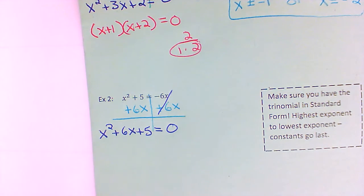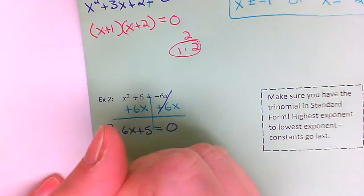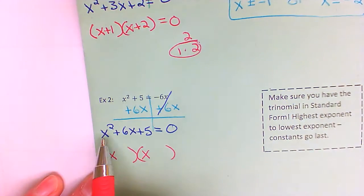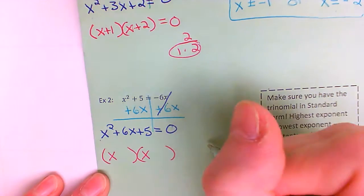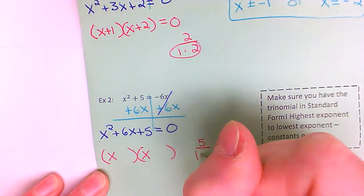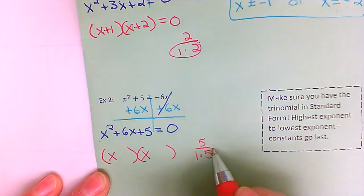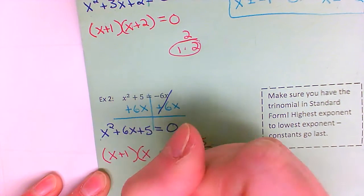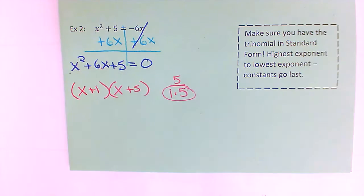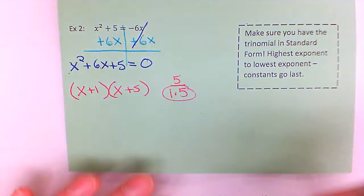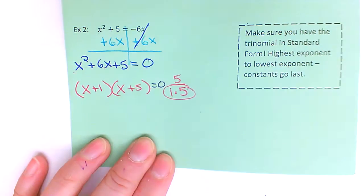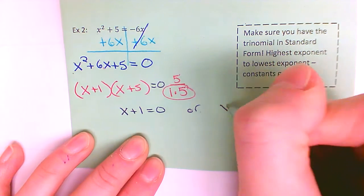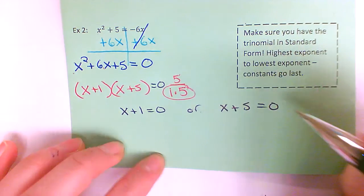Now that I've got this thing set equal to zero, I can do my two sets of parentheses — I know I don't have a number in front of the x squared. List the numbers that multiply to give me five: one times five. That does add to give me six, so that's the pair I need — plus one and plus five. Now that I have this thing factored and it is set equal to zero, I can say x plus one equals zero, or x plus five equals zero.